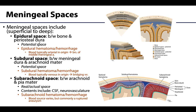Let's discuss these spaces starting with the most superficial, which is the epidural space. The epidural space is located between the bone and the periosteal dura — here's the periosteal dura, here is the bone, and here is the epidural space. This is a potential space. You'll recall that in the spinal region the epidural space is actually a real space often filled with epidural fat, but in the cranial region this epidural space can become a real space in cases of an epidural — sometimes referred to as an extradural — hematoma or hemorrhage.